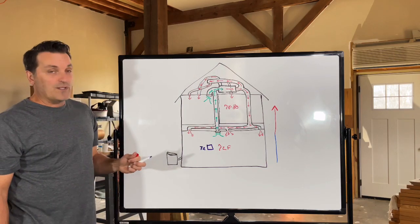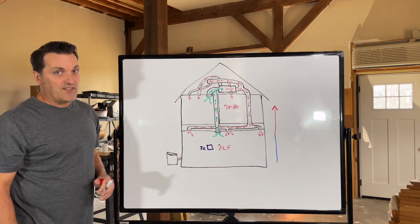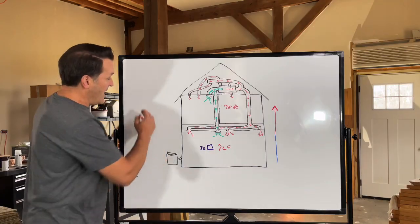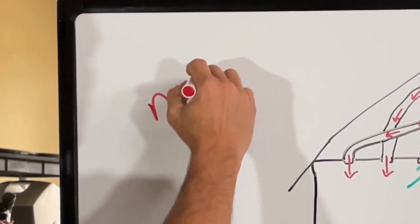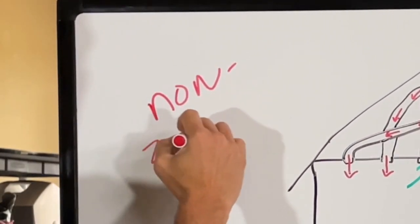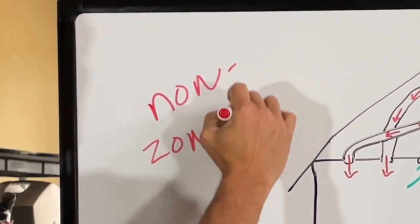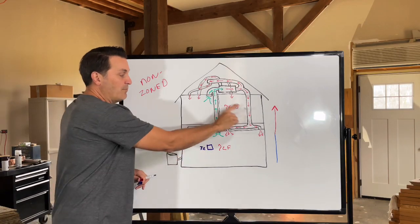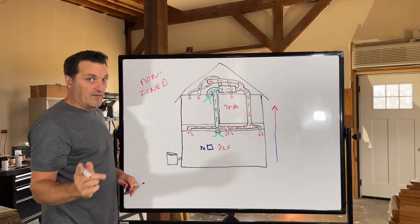Remember, it's going to always be warmer on this second floor if you only have one thermostat. This is what we would call a non-zoned system. That means only one thermostat controlling both areas or floors of the house.